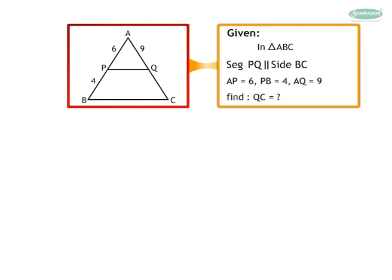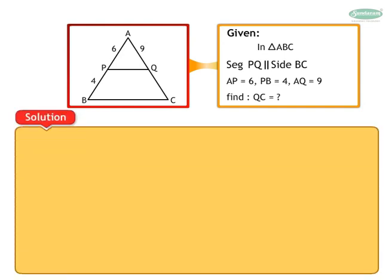Then find QC. Solution: In triangle ABC, segment PQ is parallel to side BC. Segment PQ divides side AB into AP and PB, and side AC into AQ and QC.